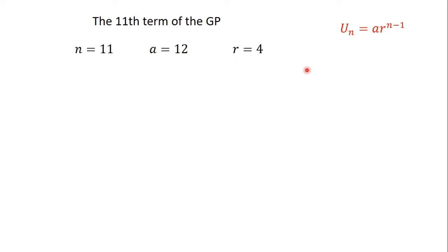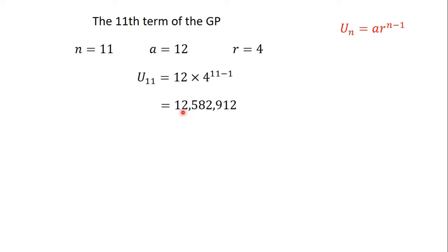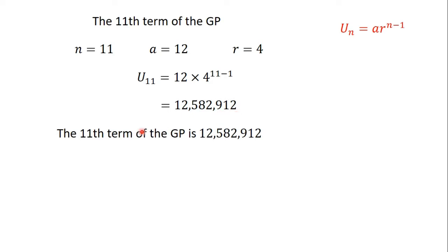The 11th term of the GP will be denoted by u₁₁, and u₁₁ is equal to 12 times 4 to the power of 11 minus 1. This gives us 12,582,912. So, the 11th term of the GP is 12,582,912.